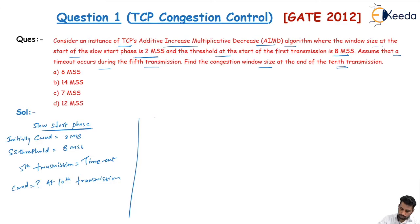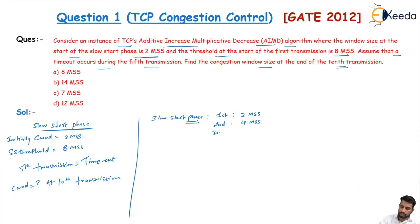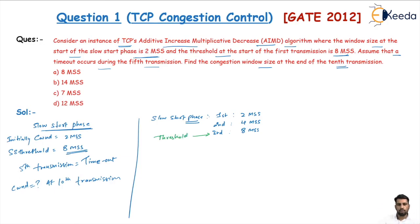The slow start phase starts here. The first transmission is equal to 2 MSS. An acknowledgement arrives and we go for the second transmission at 4 MSS. The third transmission is 8 MSS. At 8 MSS the threshold is reached, so the slow start phase stops and the congestion avoidance phase will start from the next transmission.